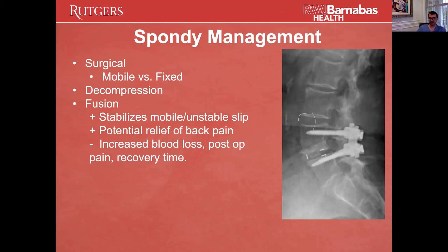Surgical management of a spondy often depends on whether it's fixed or mobile — dynamic x-rays help figure that out. First, you accomplish a decompression by drilling off the bones posterior to the canal, which gives the nerves room. Then a fusion stabilizes the mobile and potentially unstable slip. The fusion is what accomplishes relief of back pain.